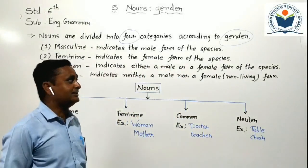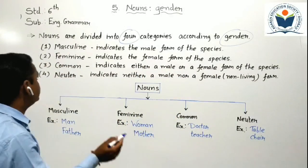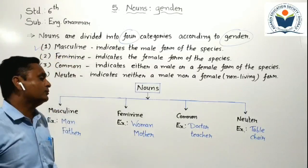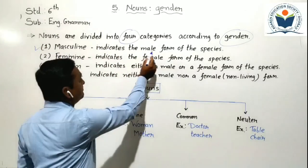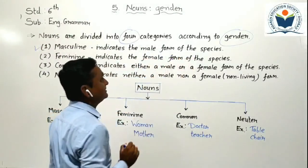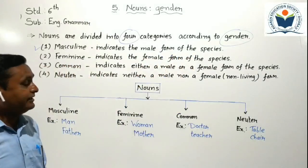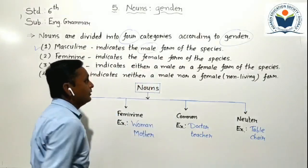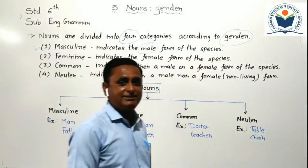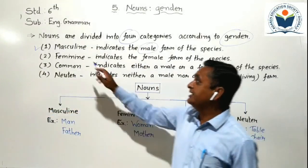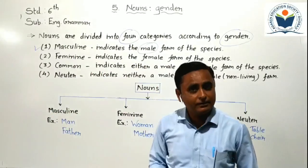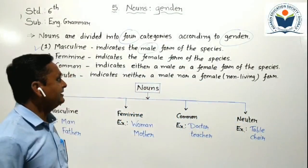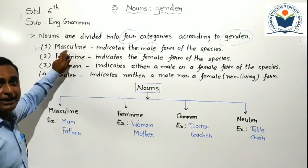Which type of 4 categories? Now we have to see. The first one is masculine gender. Masculine gender means what? Masculine gender indicates the male form of the species. If the noun is related to a male word, it is known as a masculine gender.